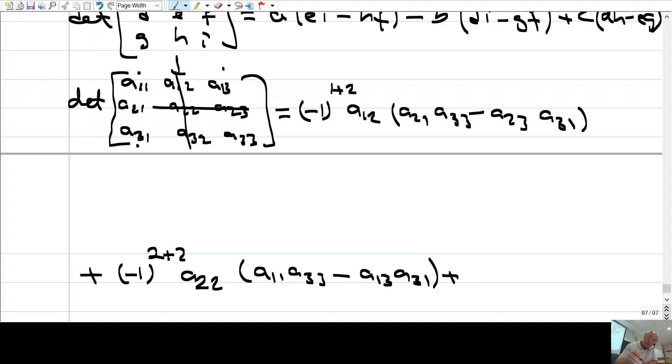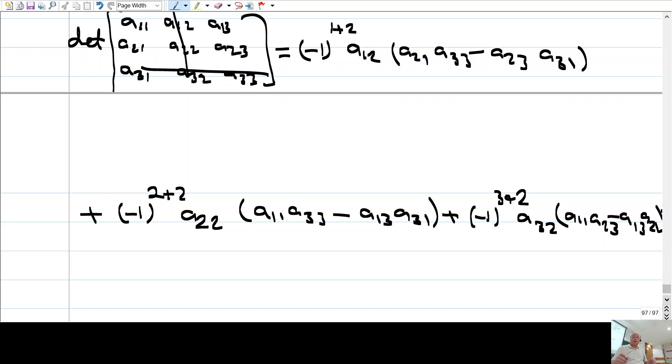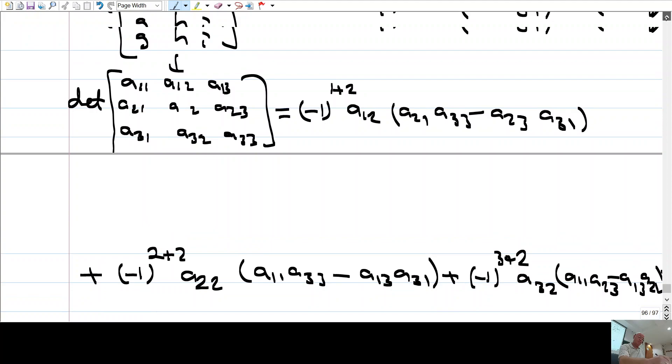Artı, artı bu eleman, üçüncü elemanı, eksi 1 üzeri 3 artı 2, A3-2. Bunu ve bunu kapattın. Ne kaldı? Determinantı A1-1, A2-3, eksi A1-3, A2-1. A1-1, A1-3, A2-1. Bu. Herhangi bir satır veya sütuna göre determinantı açabilirsiniz. Tamam mı?